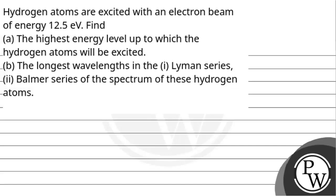Hello, let's head out the questions. Question C is: Hydrogen atoms are excited with an electron beam of energy 12.5 electron volts. Find A, the highest energy level up to which the hydrogen atoms will be excited. B, the longest wavelength in the first Lyman series, second Balmer series of the spectrum of these hydrogen atoms.